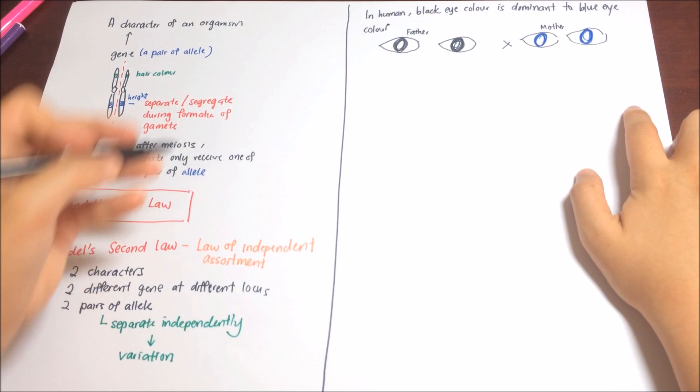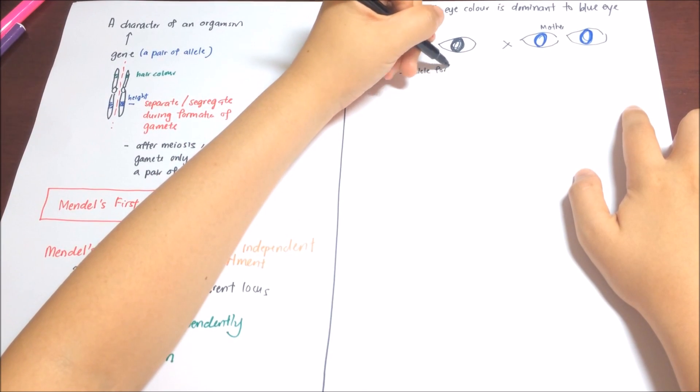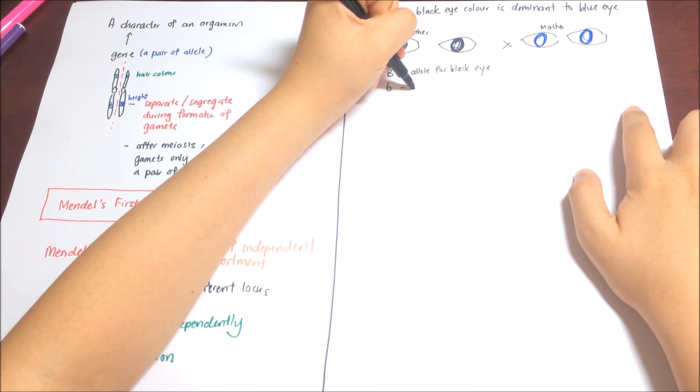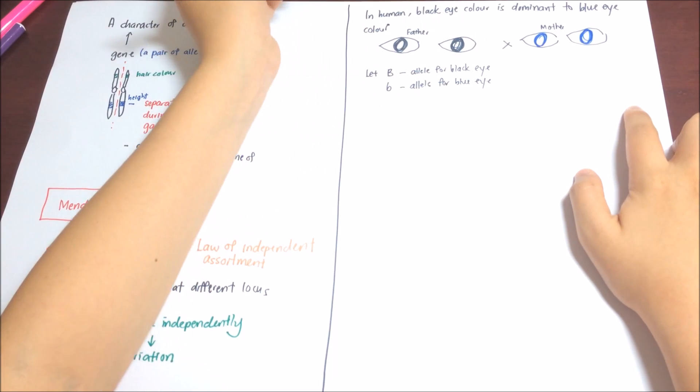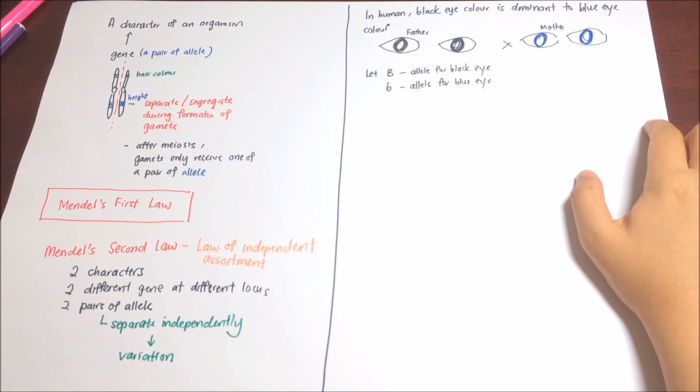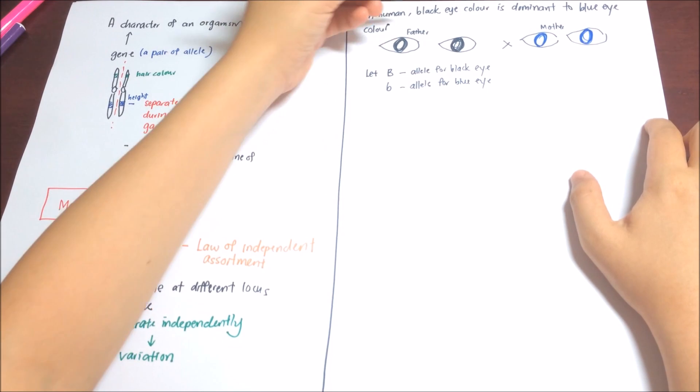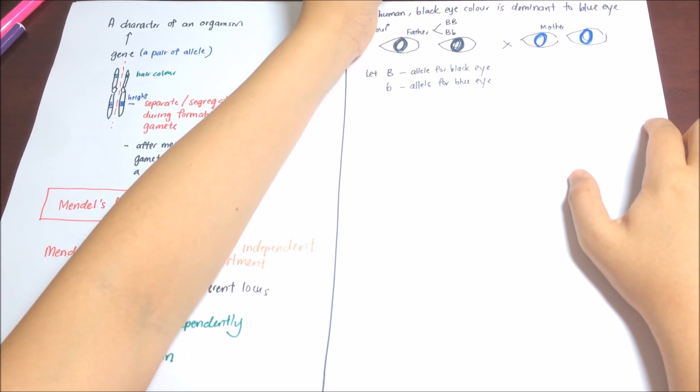Let's define the key term first. Let capital B be the allele for black eye. So, the capital B is the dominant allele. Let small letter b be the allele of blue eye. So, b, the small letter, is the recessive one.